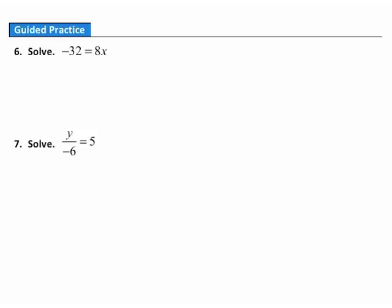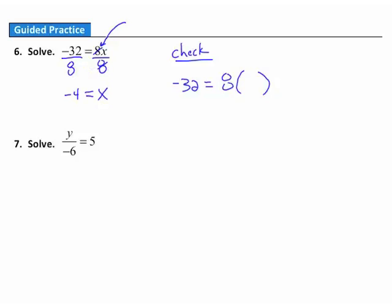Question 6. We're asked to solve this equation. The multiplication by 8 keeps the variable x from being all alone, so to undo it, I divide both sides by 8. On the right, the common factors of 8 divide out, leaving x. On the left, negative 32 divided by positive 8 gives negative 4. Checking: substituting negative 4, positive 8 times negative 4 gives negative 32, which matches. The solution of negative 4 is correct.